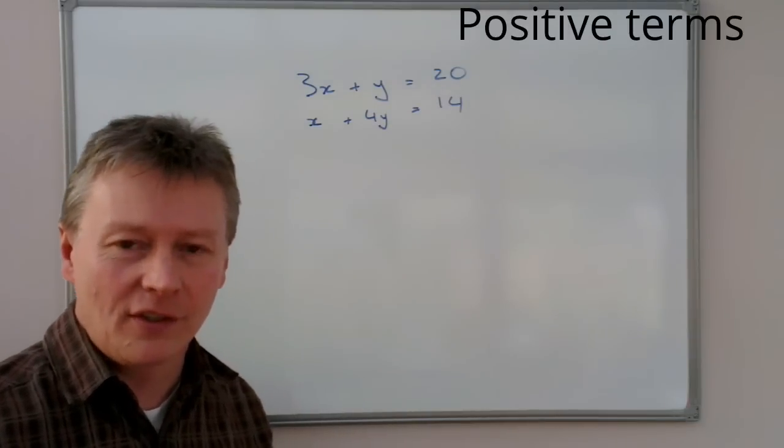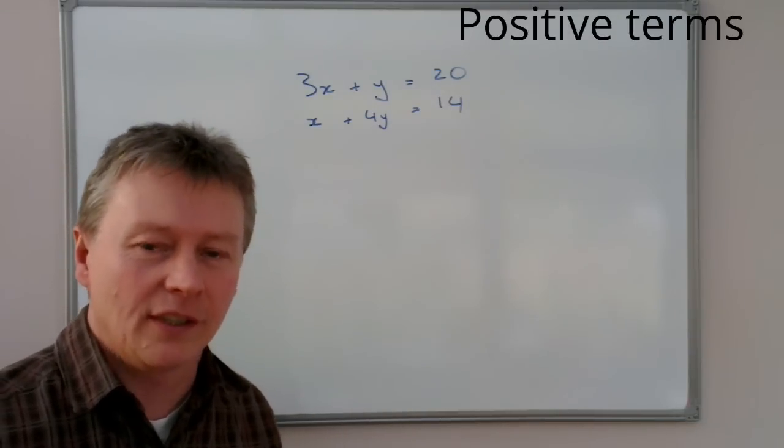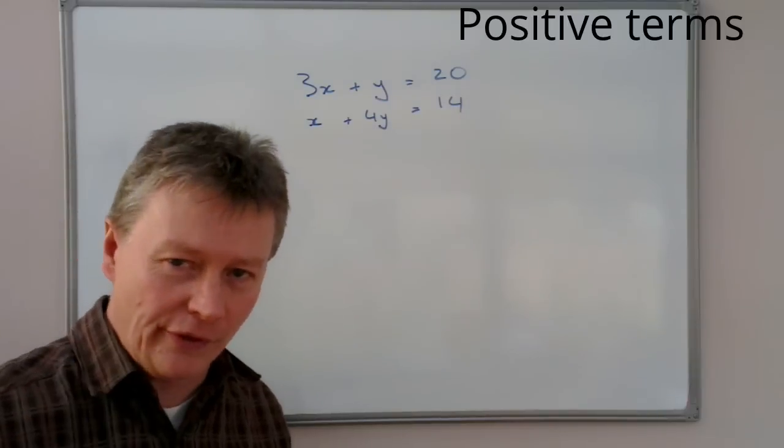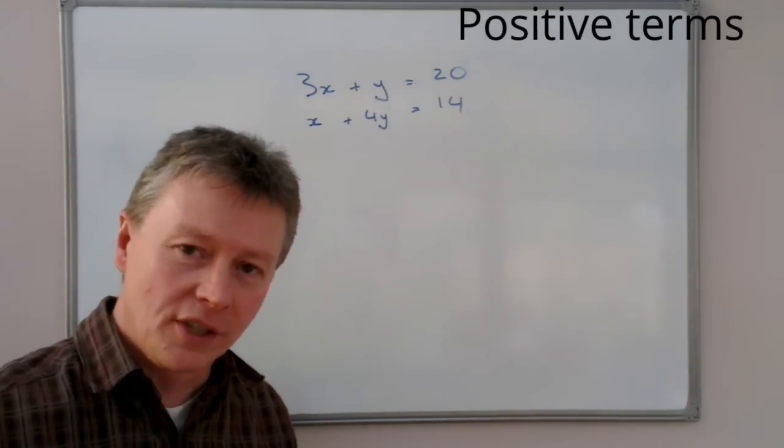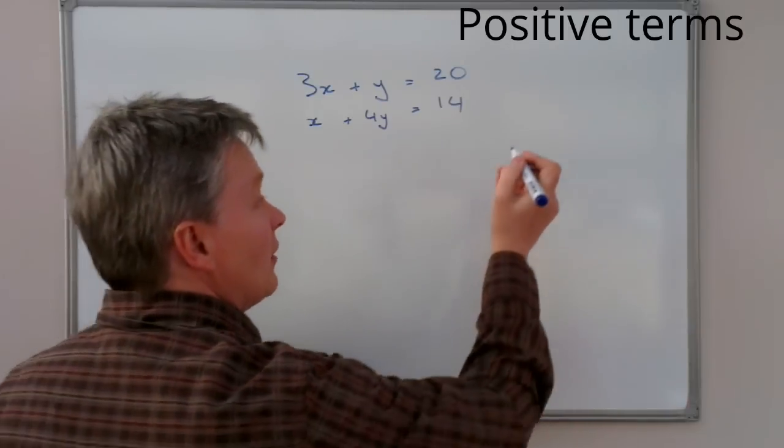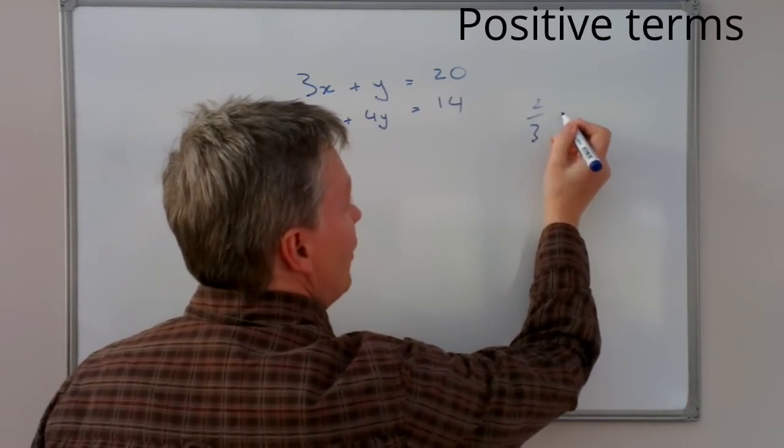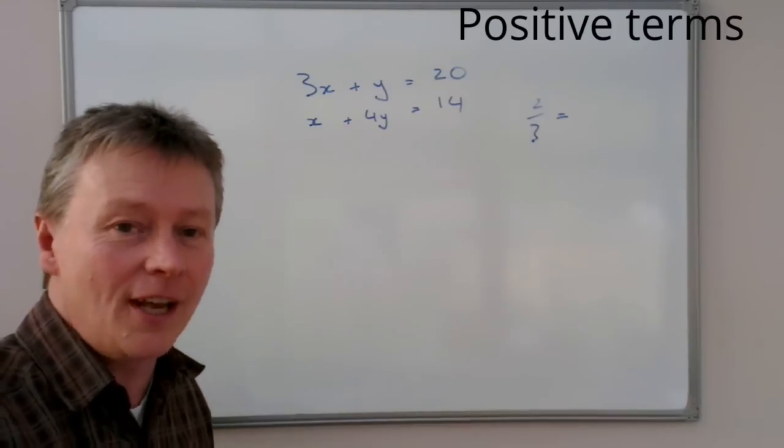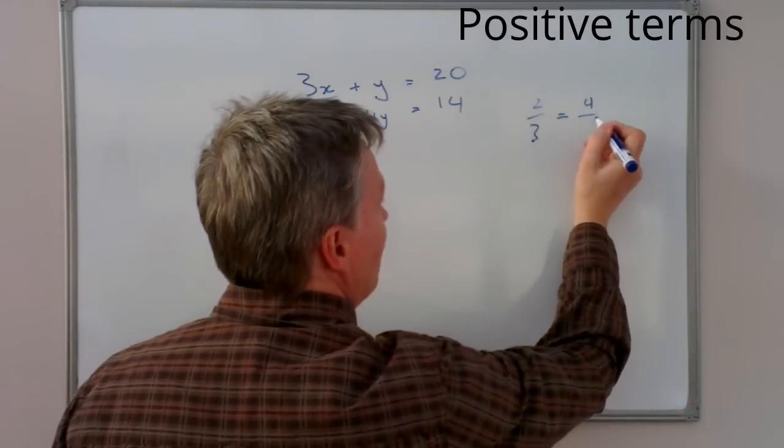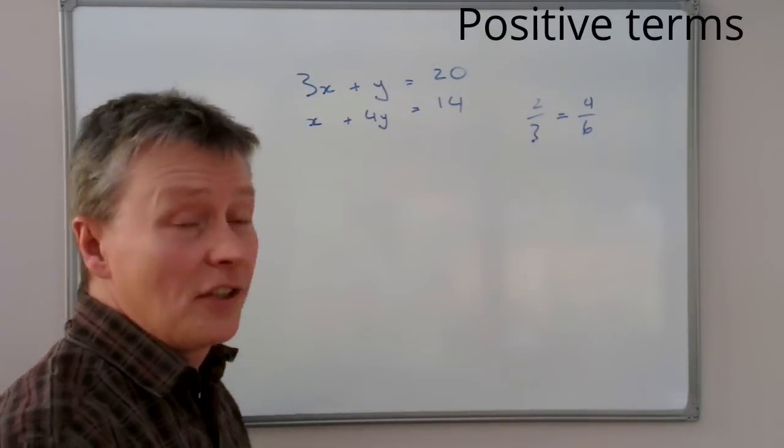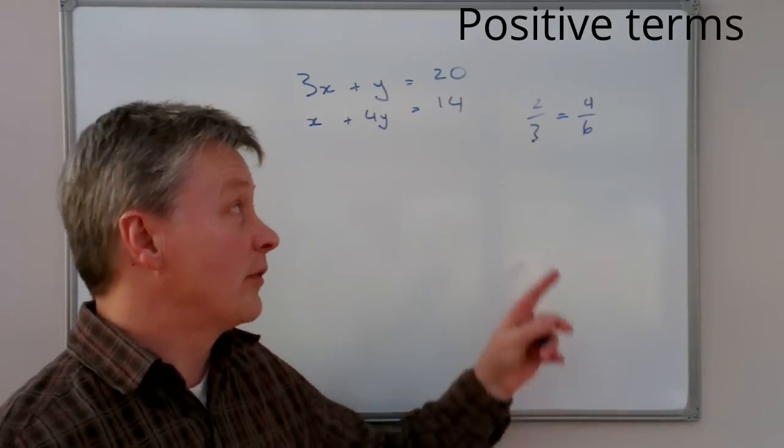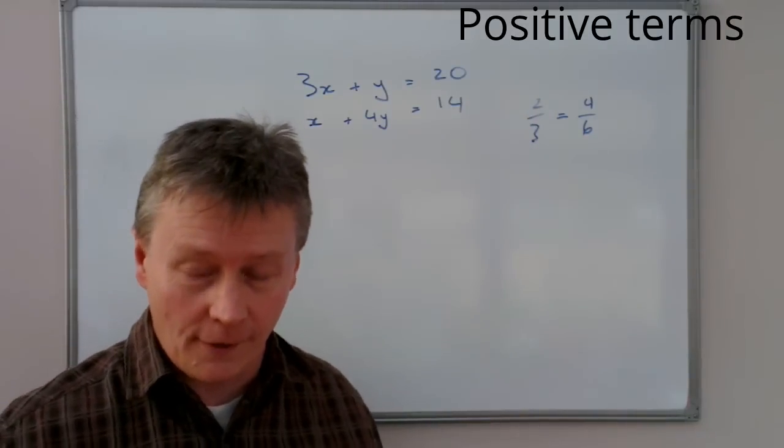it's a bit like fractions. With a fraction, what we can do is anything that we do to the top of a fraction, we also can do to the bottom. So, for instance, 2 thirds is exactly the same as 4 over 6. There's nothing different. All we've done is we've multiplied top and bottom by 2.